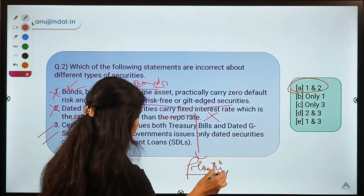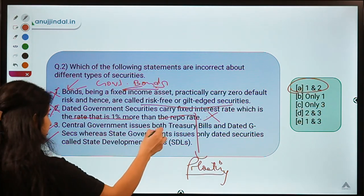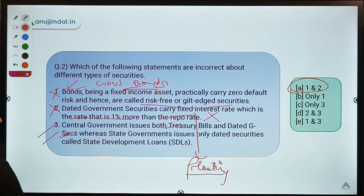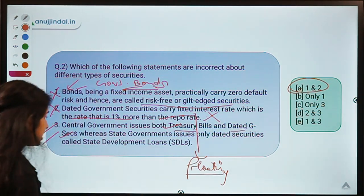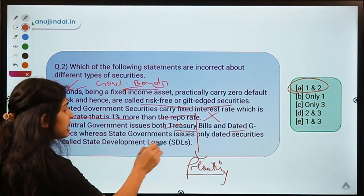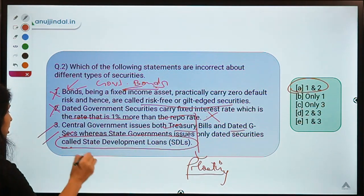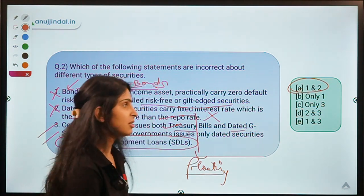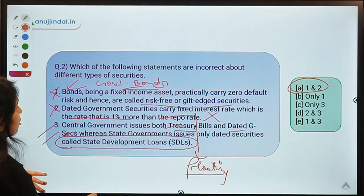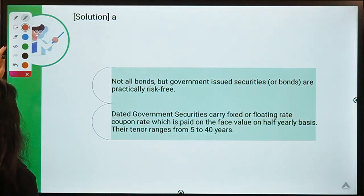The third statement is correct: the central government issues both treasury bills (short-term) and dated government securities (long-term), whereas state governments only issue long-term securities called State Development Loans. This was a point discussed in a previous session.